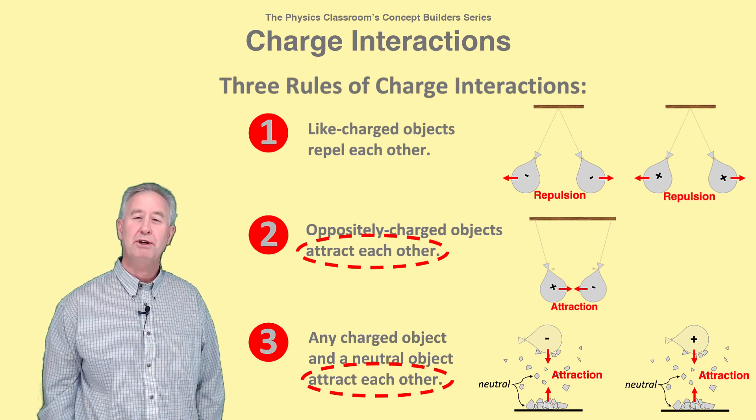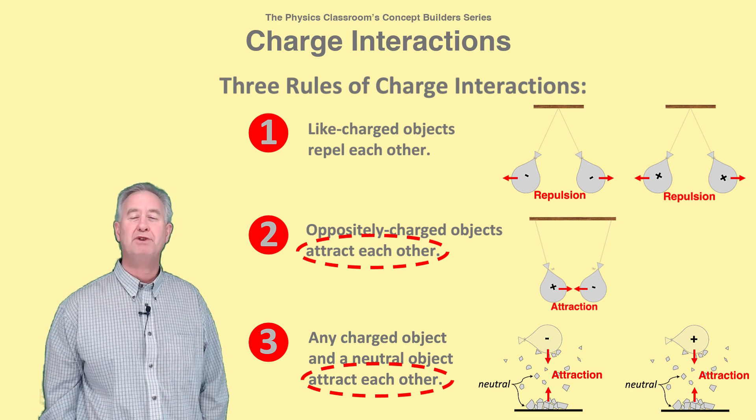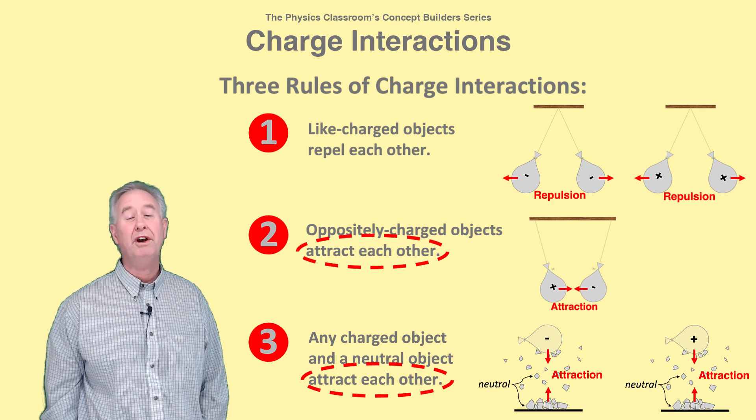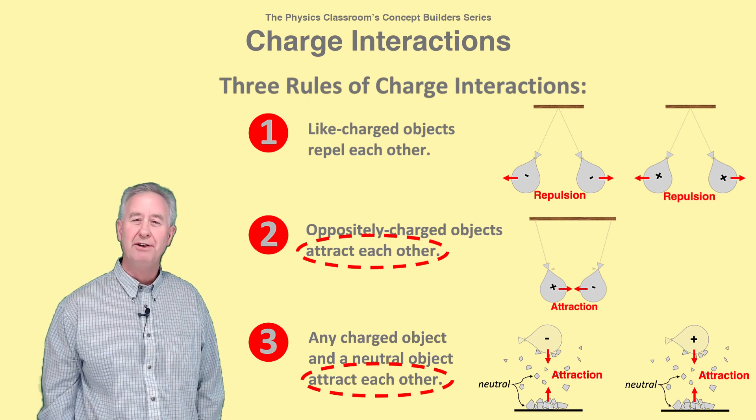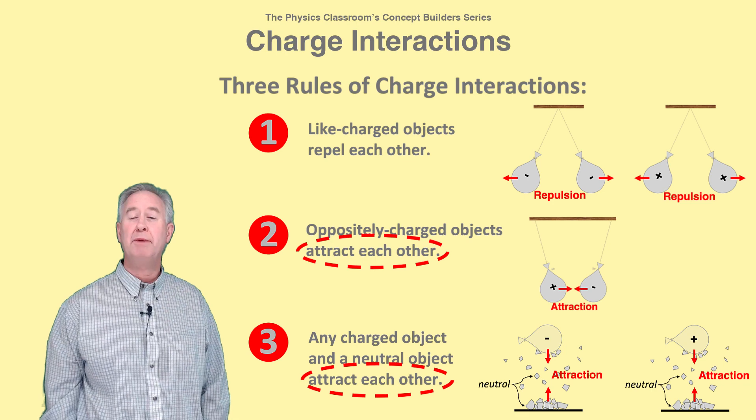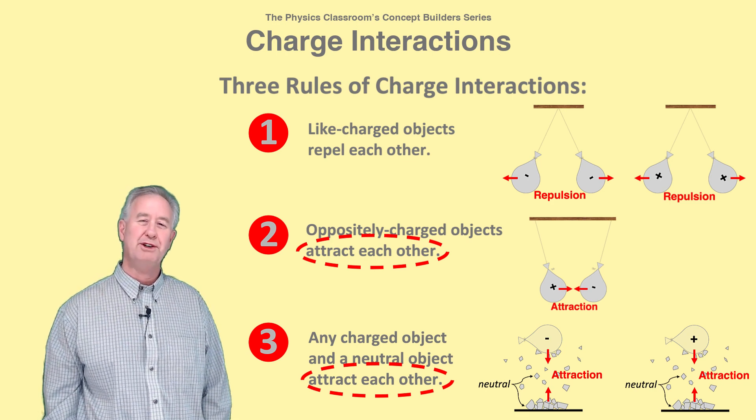First, both objects could be charged with opposite types of charge, one positive, the other negative. Or second, one of the objects could be charged and the other object is neutral. Further observations would have to be made to determine which explanation applies.